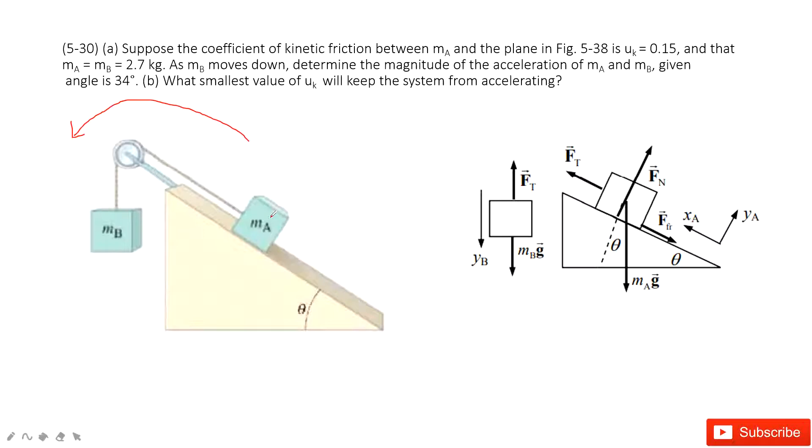For object A, we have gravity, tension, normal force, and friction. Because A moves up, the friction is down, opposite to the motion. We can project the gravity at x-component and y-component: m_A g cos θ and m_A g sin θ.